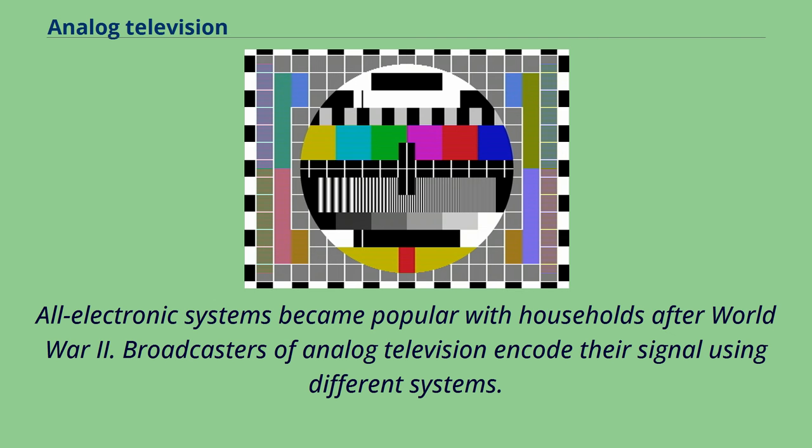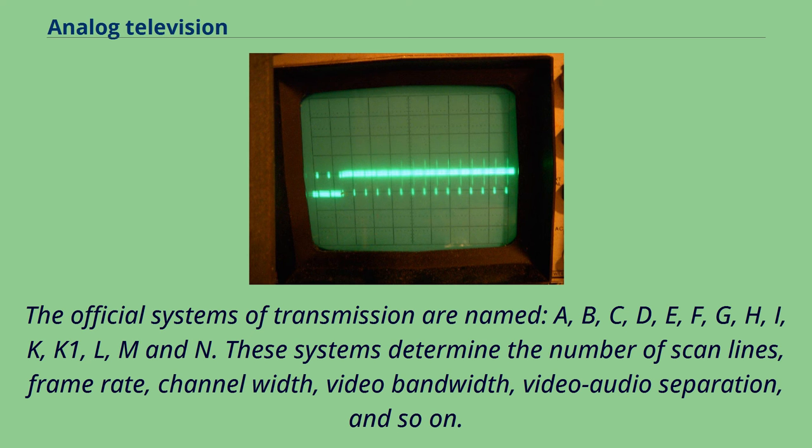Broadcasters of analog television encode their signal using different systems. The official systems of transmission are named A, B, C, D, E, F, G, H, I, K, K1, L, M, and N.